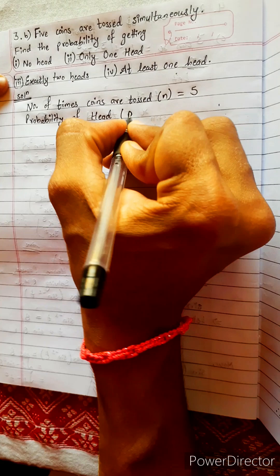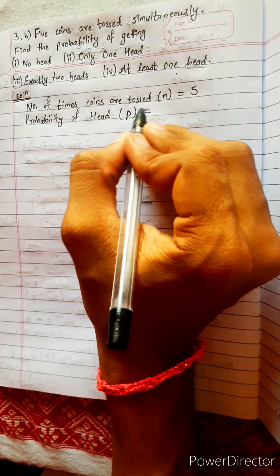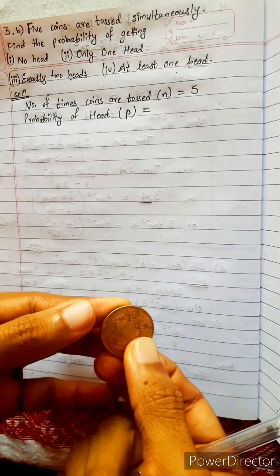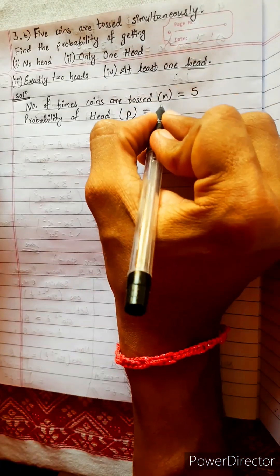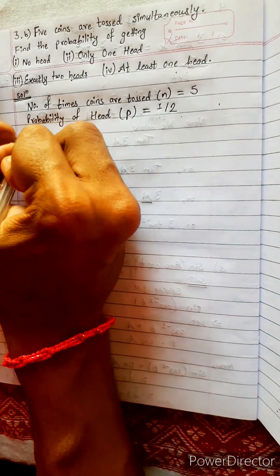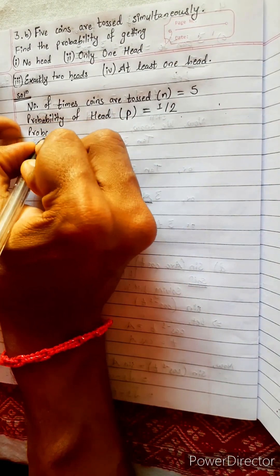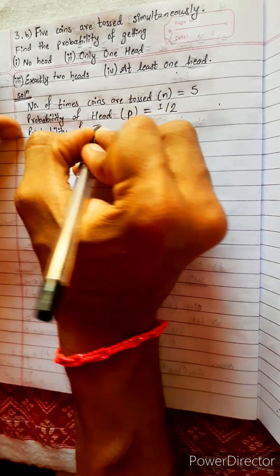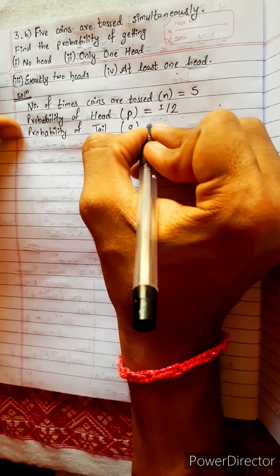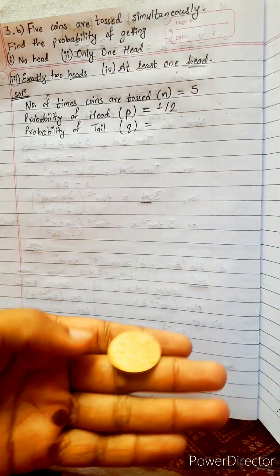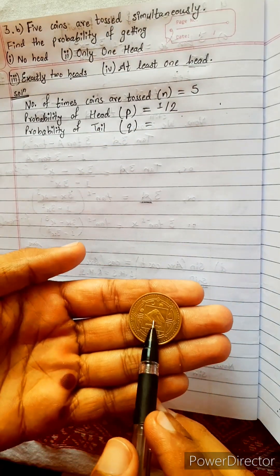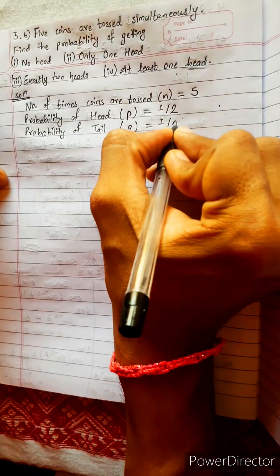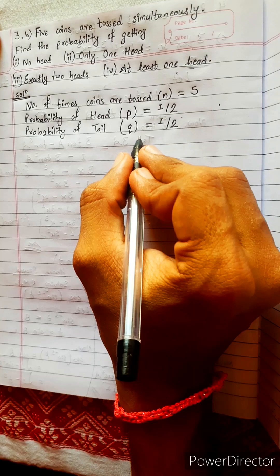Probability of head, which we call success P, equals favorable cases divided by total cases: one head divided by two faces (head and tail), so P equals 1/2. Similarly, probability of tail, represented by Q, equals tail face divided by total two faces, so Q also equals 1/2. We now have P, Q, and n.